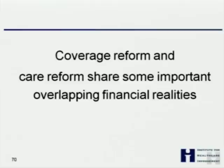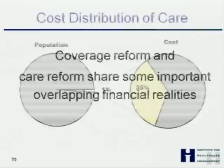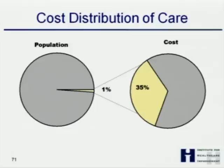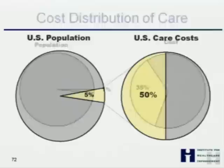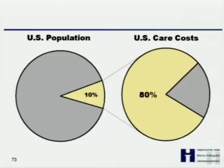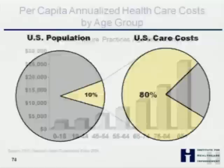Coverage reform and healthcare reform share overlapping financial realities. The cost of care is not evenly distributed — a small percentage of people incur most of the costs. 1% of the population accounts for about 35% of the cost of care. 5% of the population accounts for about 50% of the cost of care. And 10% of the population accounts for about 80% of the cost of care. We could intervene with that 10% and do meaningful, high-leverage interventions to keep them from moving into being the 1%.